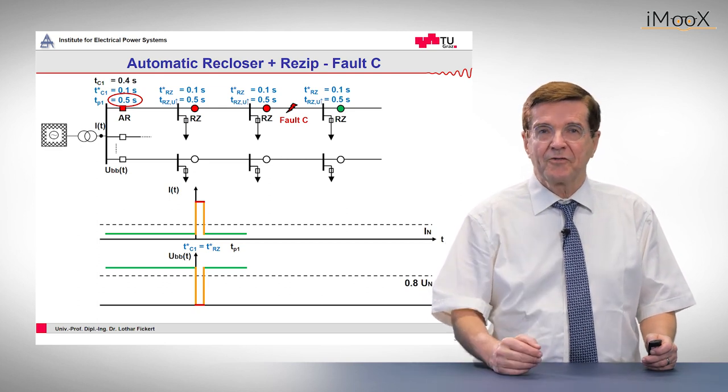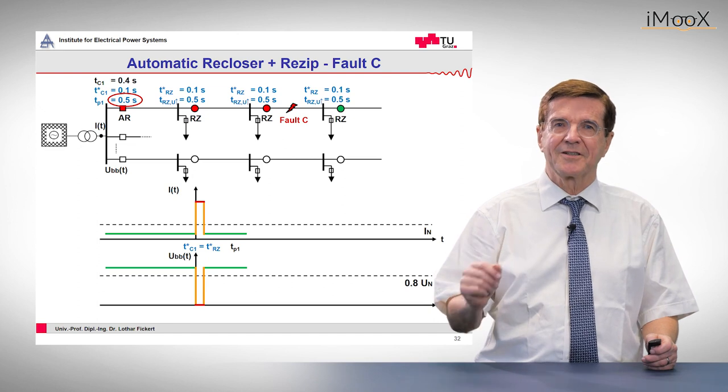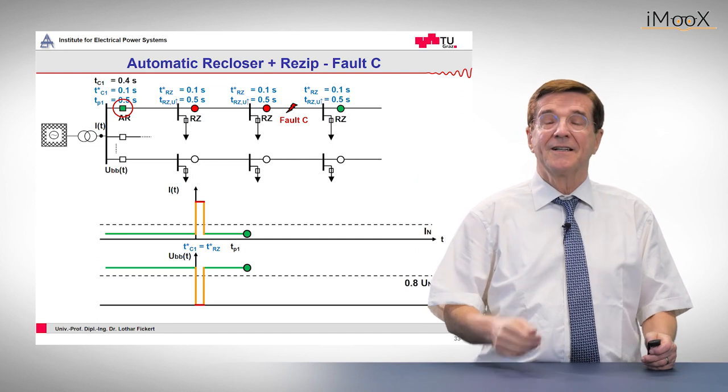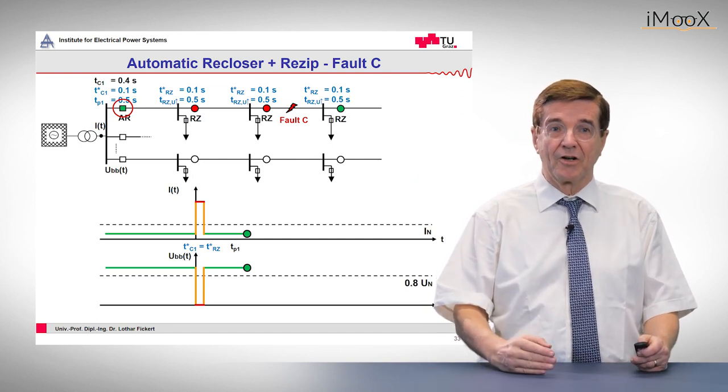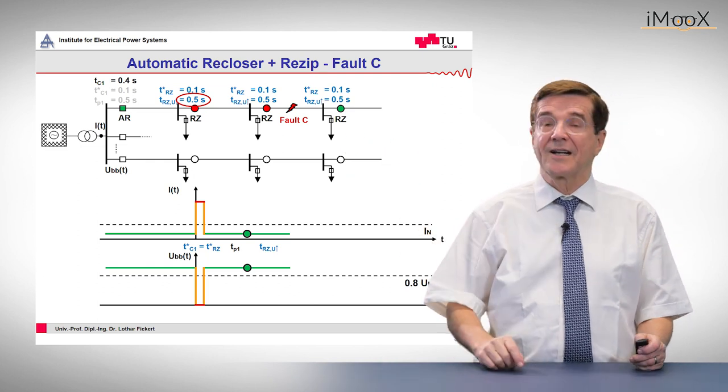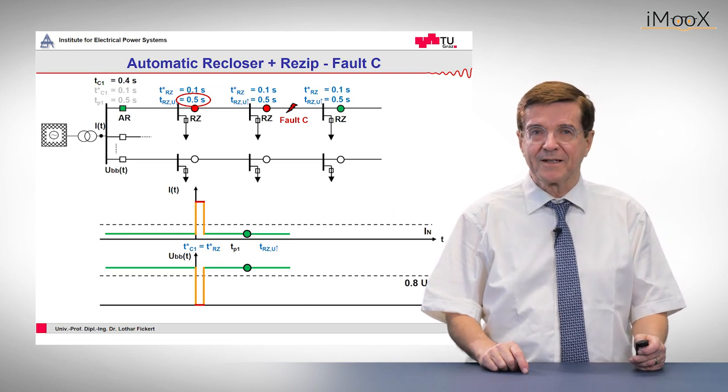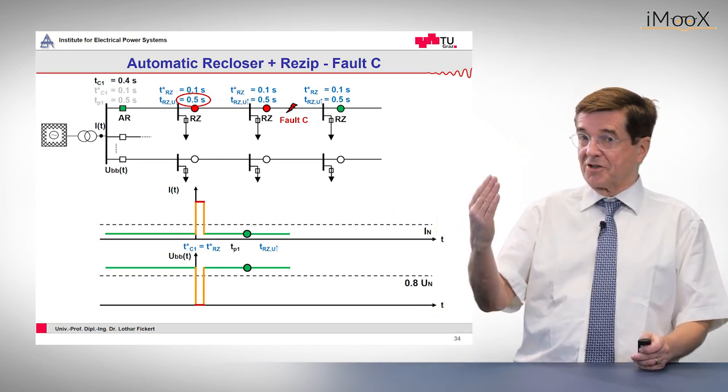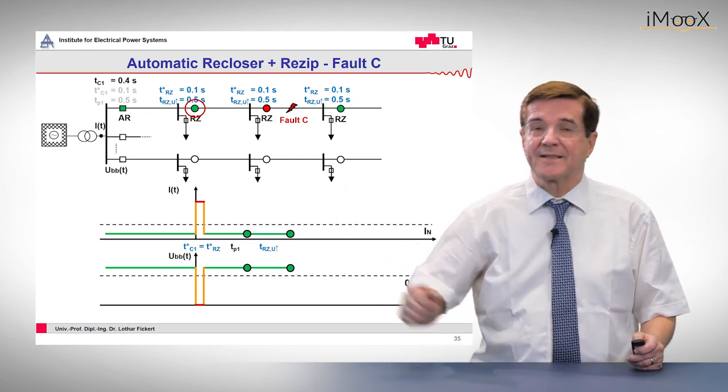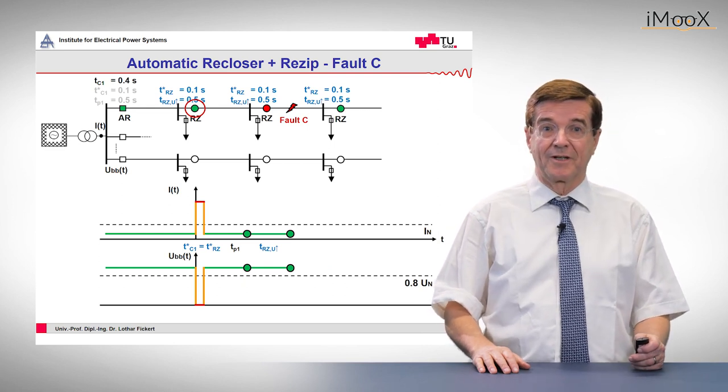Now after 0.4 seconds, an automatic switching sequence starts. We start at the beginning of the line, where after 0.5 seconds this auto recloser relay closes and energizes the line, including the next bar and the next re-zip auto recloser. So what happens here? The auto recloser sees a voltage coming, waits half a second and closes, and passes the voltage on to the next busbar and the next re-zip auto recloser.